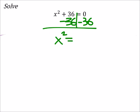Well, I take that back. It kind of does work. We've got negative 36 equals x squared. Are we good there?